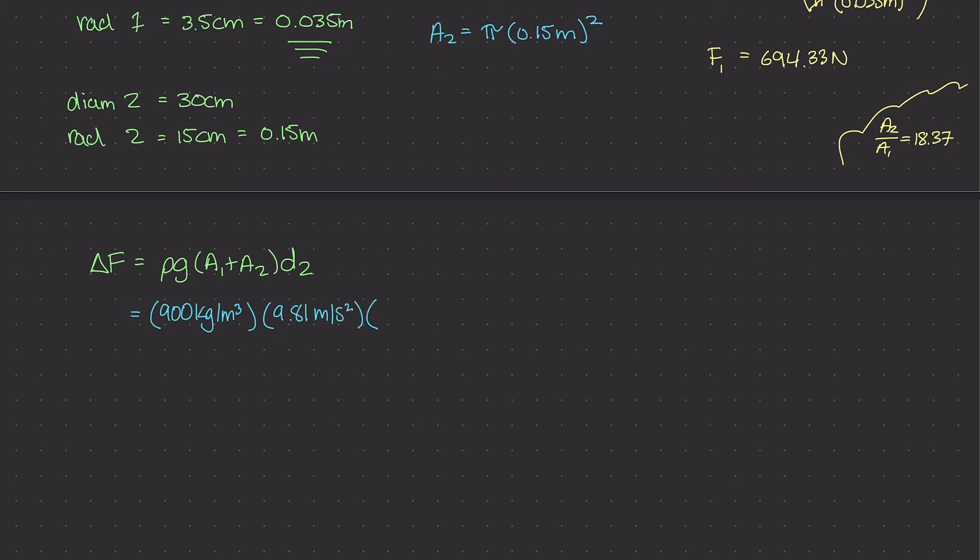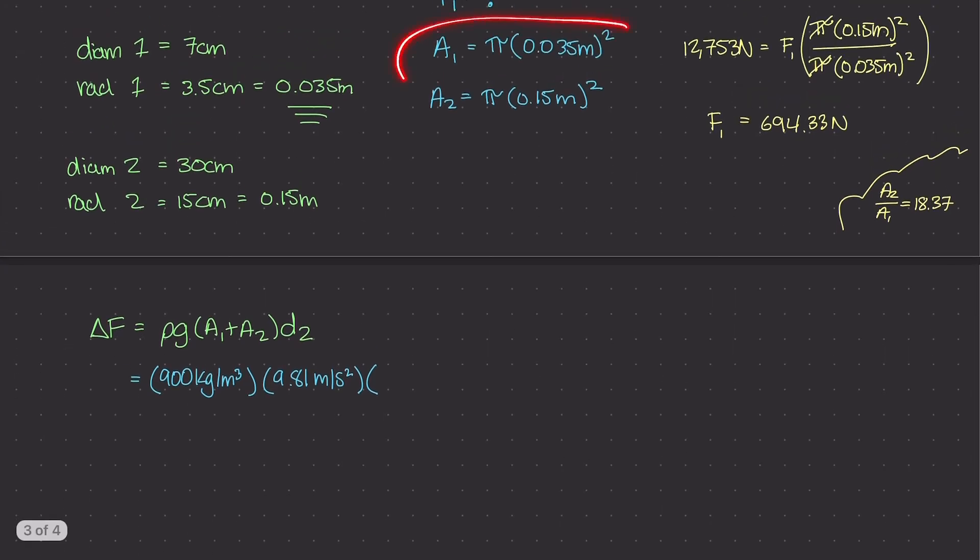And then we have these two A1 plus A2 terms. And if you remember from the last video, I just kind of kept them as this so we didn't have to deal with some crazy long irrational numbers. But I'll just keep them as is. So area 1 is pi times 0.035 meters squared plus pi times 0.15 meters squared.